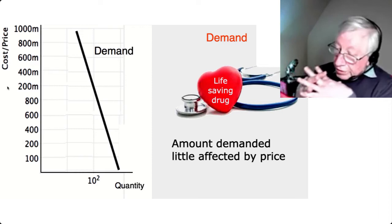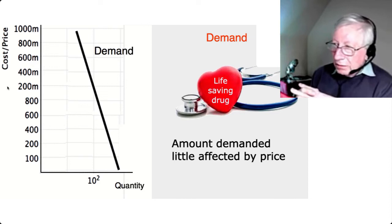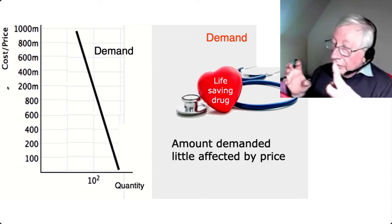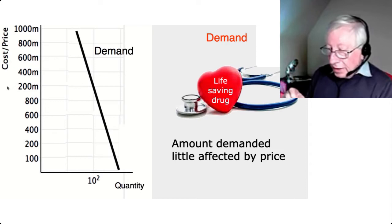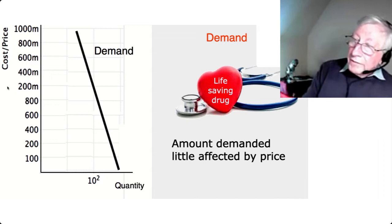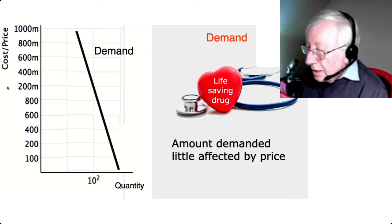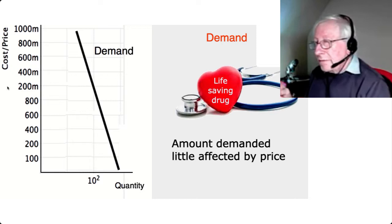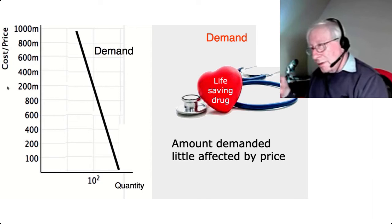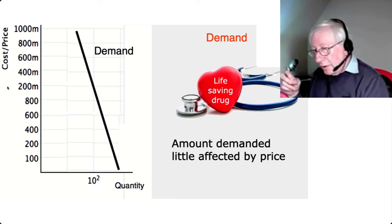In pharmaceuticals the demand curve is very steep — demand is inelastic. Inelastic means it doesn't vary very much relative to price. An elastic demand curve would mean that when the price is low we buy a lot, and when the price is high we buy very little or perhaps none. But for pharmaceutical products we're talking about inelastic demand curves — the quantity demanded doesn't change very much even if the price is high.